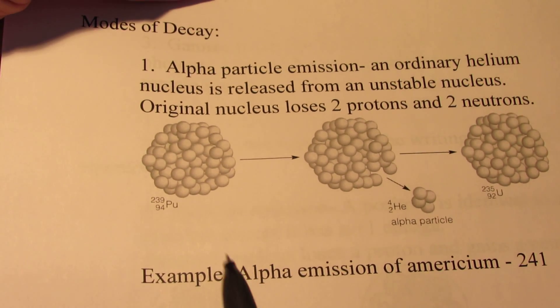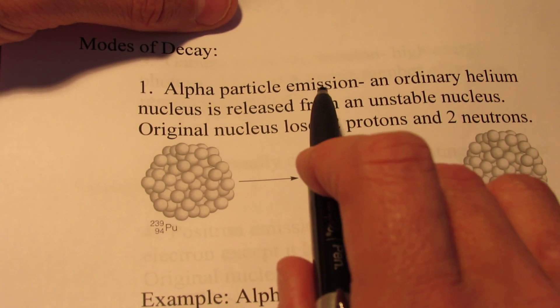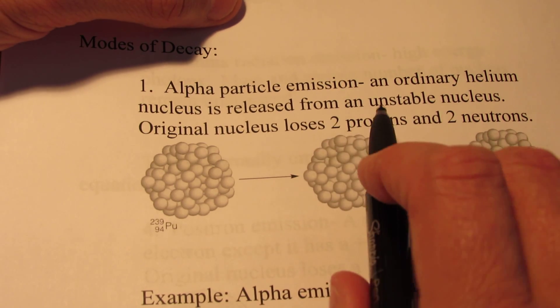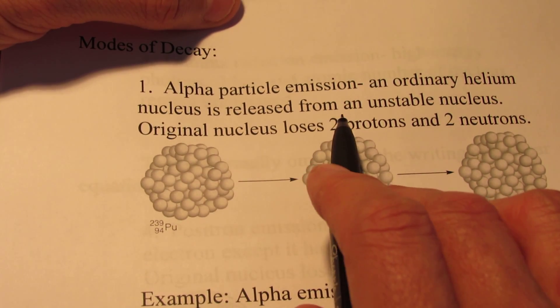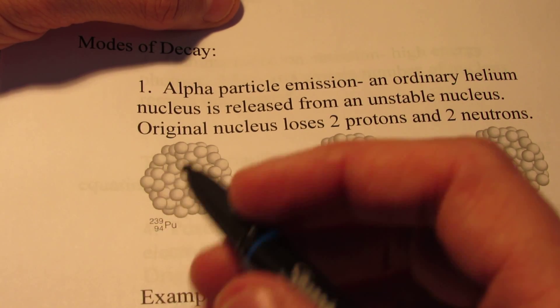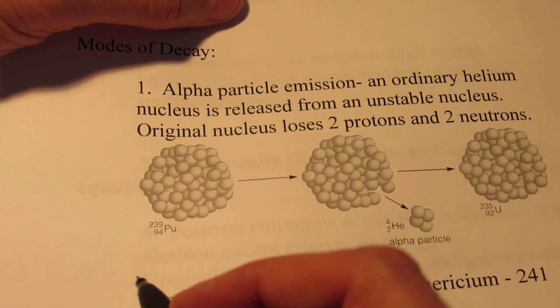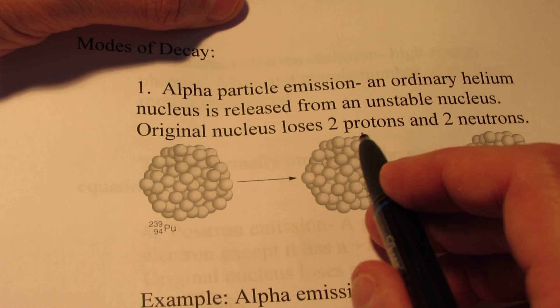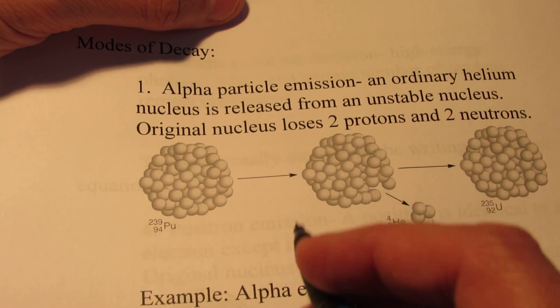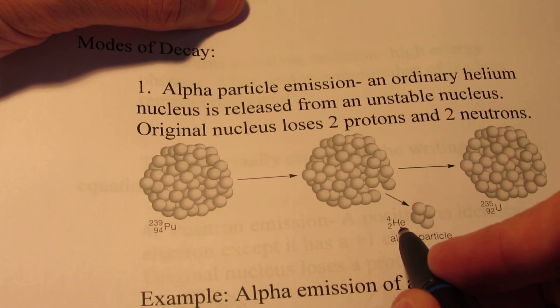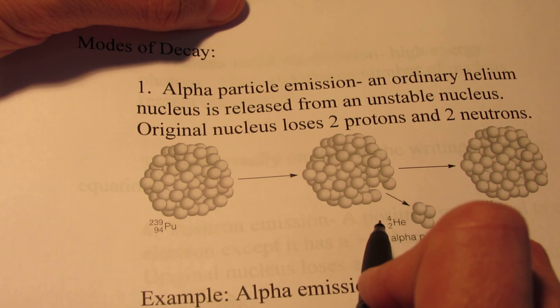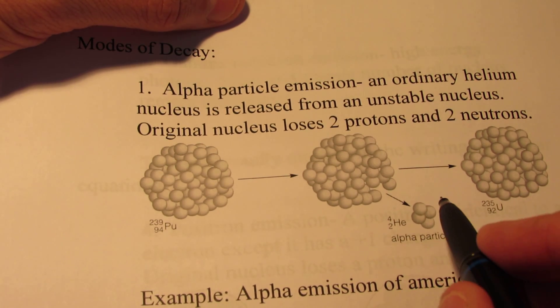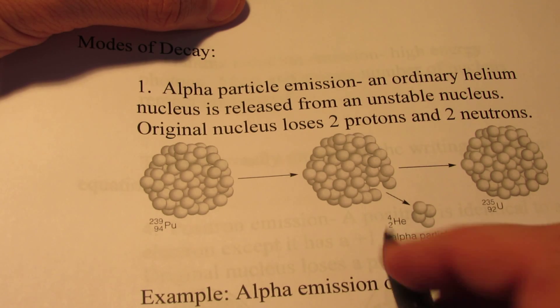So the first type of particle we're going to talk about is an alpha particle. An alpha particle simply is an ordinary helium nucleus, and it's released from an unstable nucleus of a radioactive atom. The original nucleus will lose two protons and two neutrons, which is the same as the mass of a helium atom. Two protons making the atomic number two, plus two neutrons making the mass number of four.